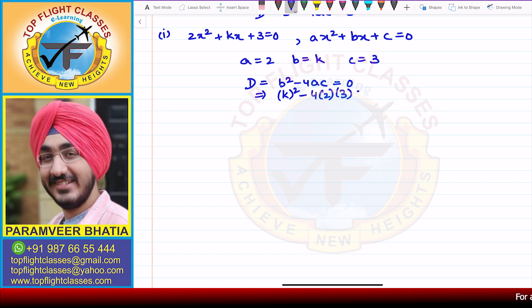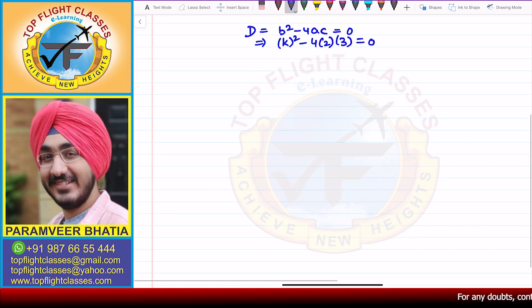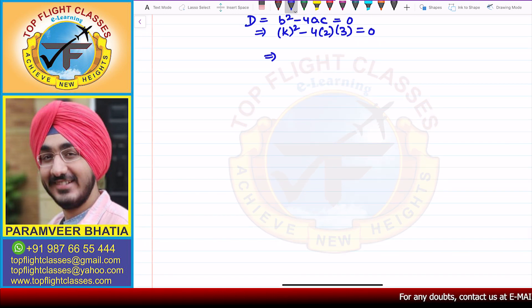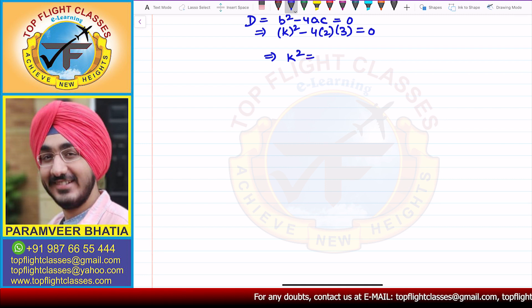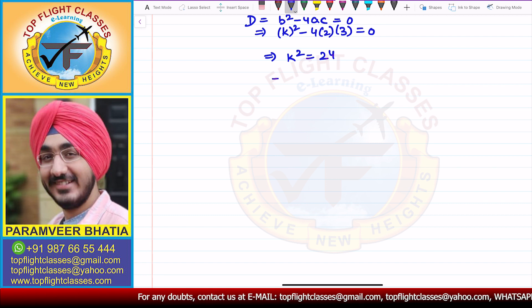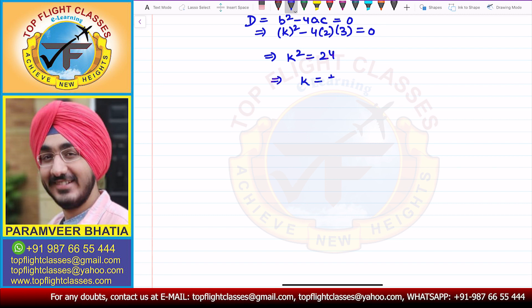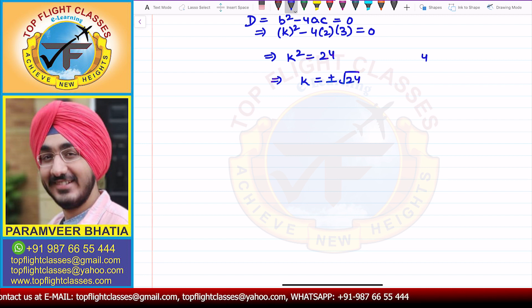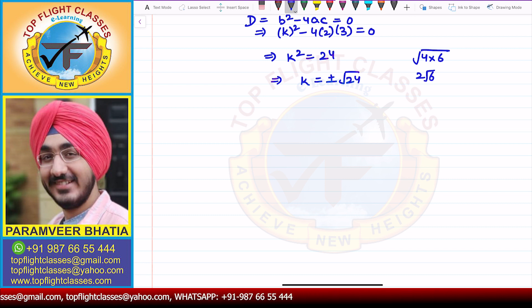This gives us k² - 4 × 2 × 3 = 0, so k² = 24. Therefore k = ±√24. Since 24 = 4 × 6, we get k = ±2√6.